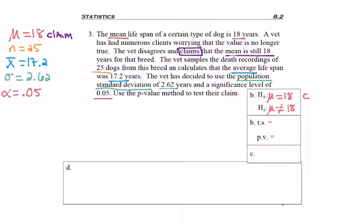Maybe the value is less than, maybe it's greater than. Keep in mind the vet's clients were just saying that it was no longer true. They didn't actually make a decision one way or the other. But if your claim is equal to, we always make the alternate not equal to.